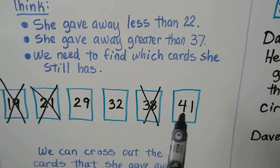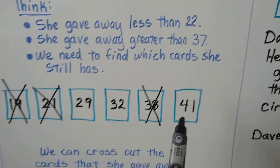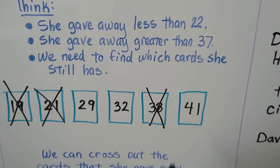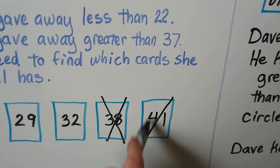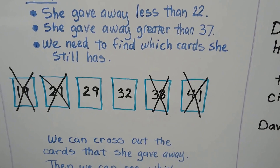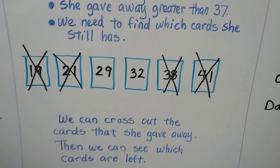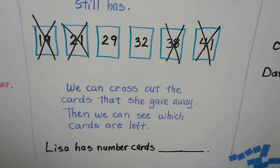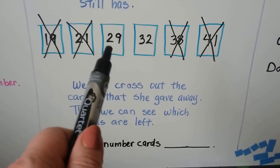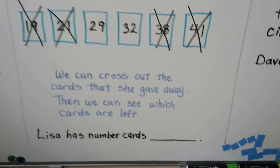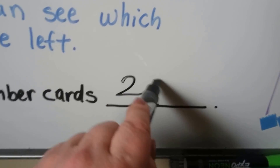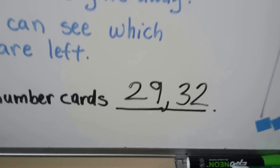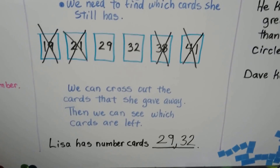How about 41? Is that greater than 37? It's got four tens and 37 has three tens — yes, that is greater than 37, so she gave it away. We cross out the cards she gave away, then we can see which cards are left. Lisa still has 29 and 32.